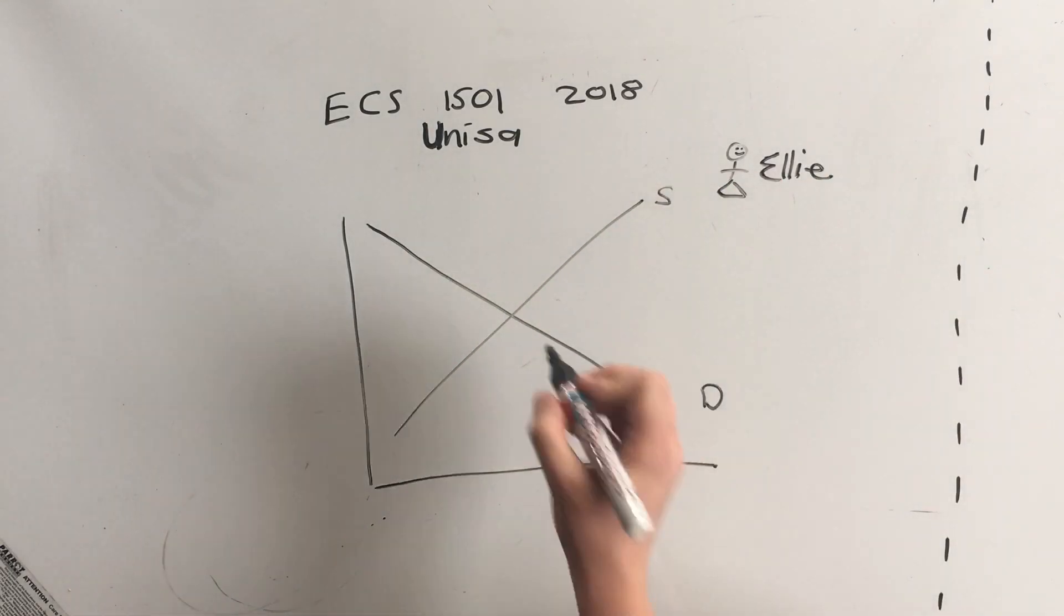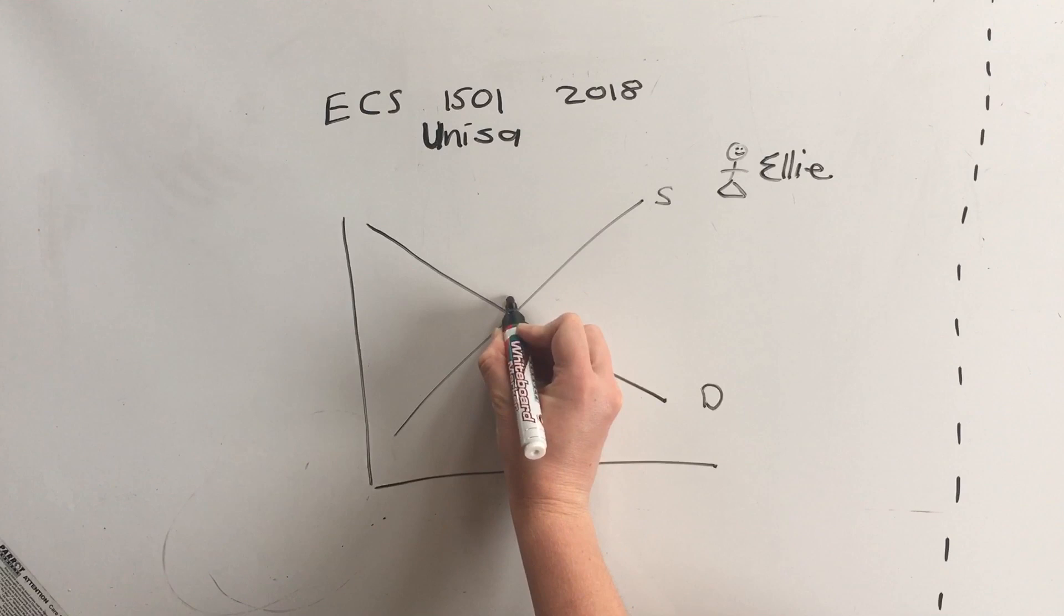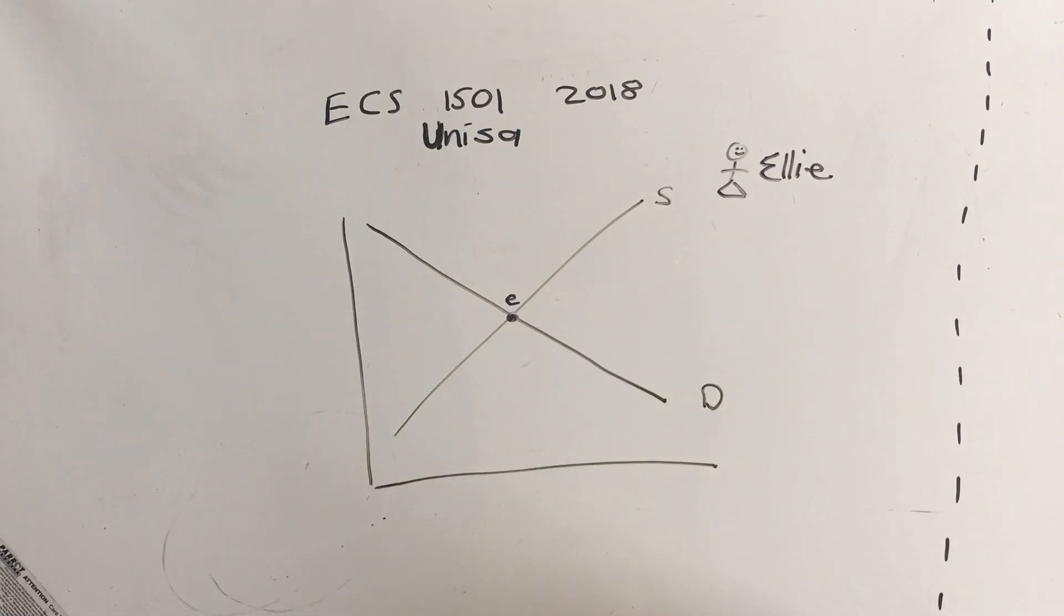Then the point where they meet is the equilibrium. This is the happy place, this is where everybody is content and what we are offering versus what people are buying is exactly the same. In the first video we used the example of an Xbox, so I'm going to continue with Xbox. This is the sale of Xboxes on campus.